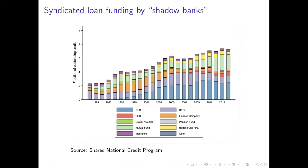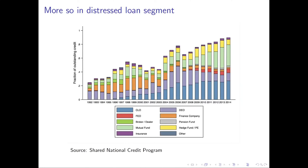A second pattern is a shift in the diversity of institutions funding these loans — corporate loan securitization on the one hand, but also asset managers, hedge funds, private equity, and so on holding these loans on their balance sheets. If you look at the distressed loan segment of the market, the same patterns exist: in the distant past, it was mostly banks funding these loans, but fast-forward to present, it's now almost entirely funded by non-bank financial institutions — nearly 100% — with more asset managers, hedge funds, and corporate loan securitization showing up.